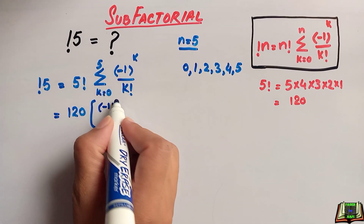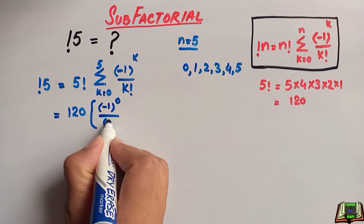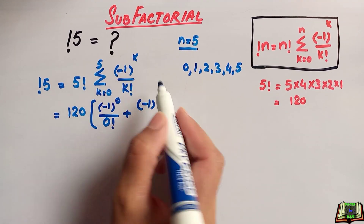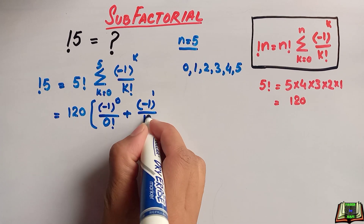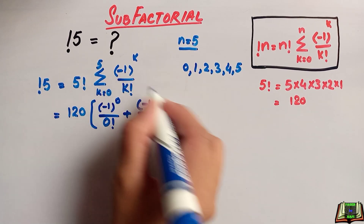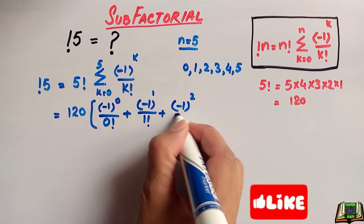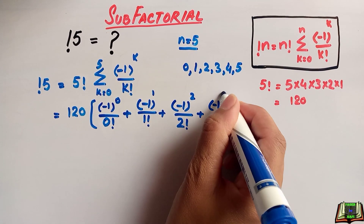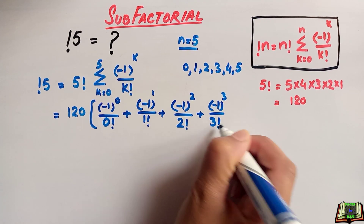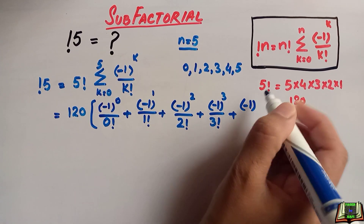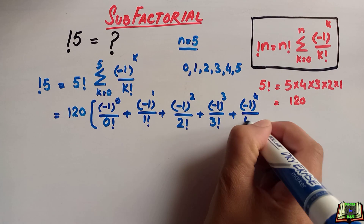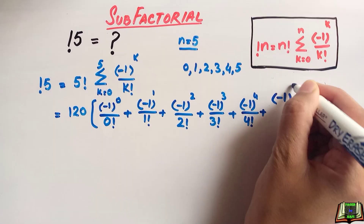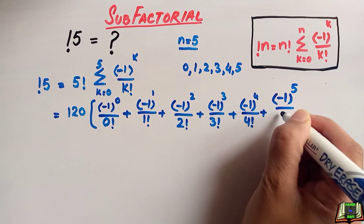The expanded sigma gives us: minus 1 to the power 0 over 0 factorial, plus minus 1 to the power 1 over 1 factorial, plus minus 1 to the power 2 over 2 factorial, plus minus 1 to the power 3 over 3 factorial, plus minus 1 to the power 4 over 4 factorial, plus minus 1 to the power 5 over 5 factorial.